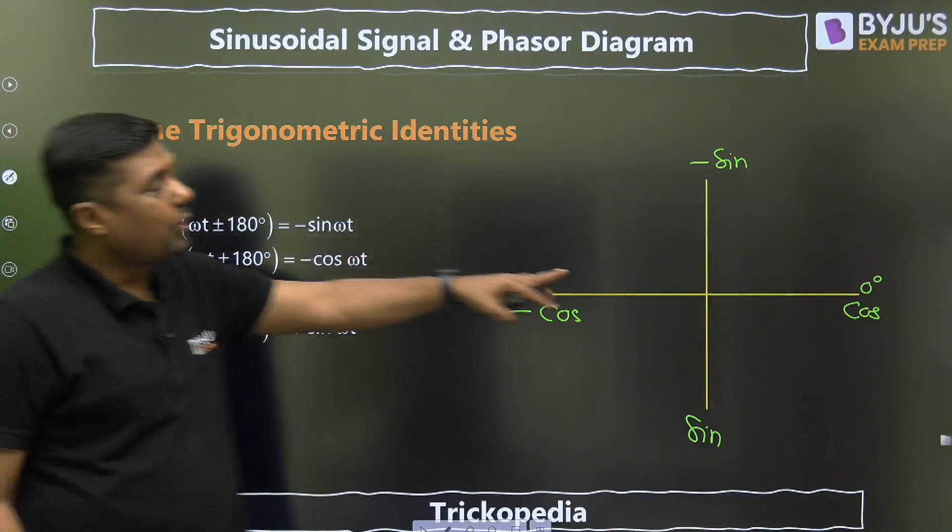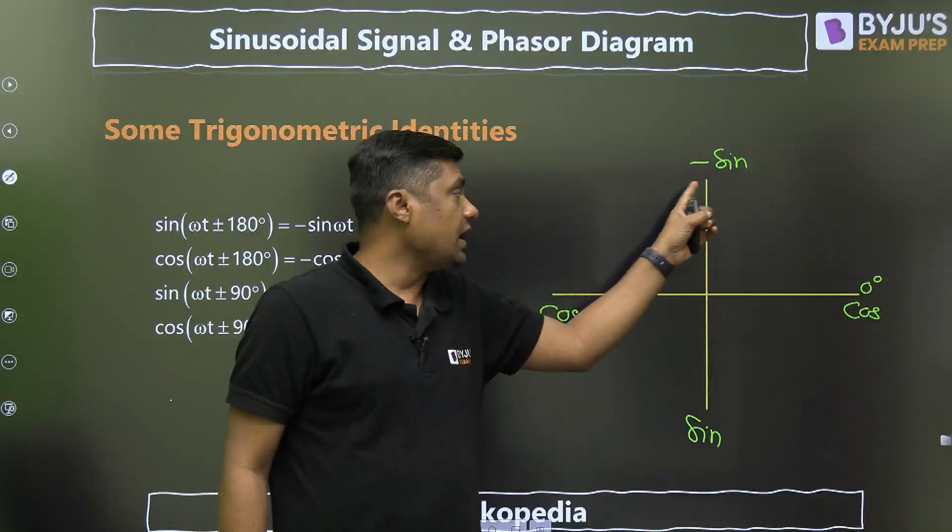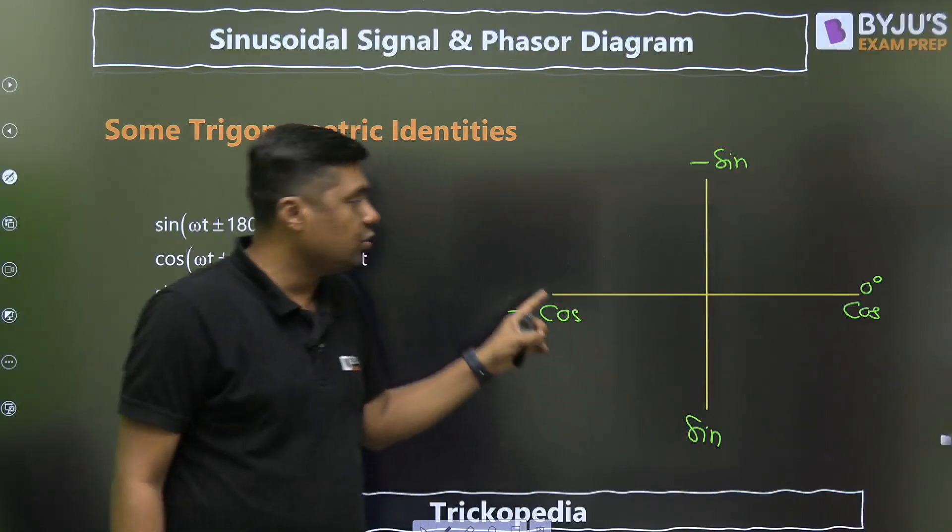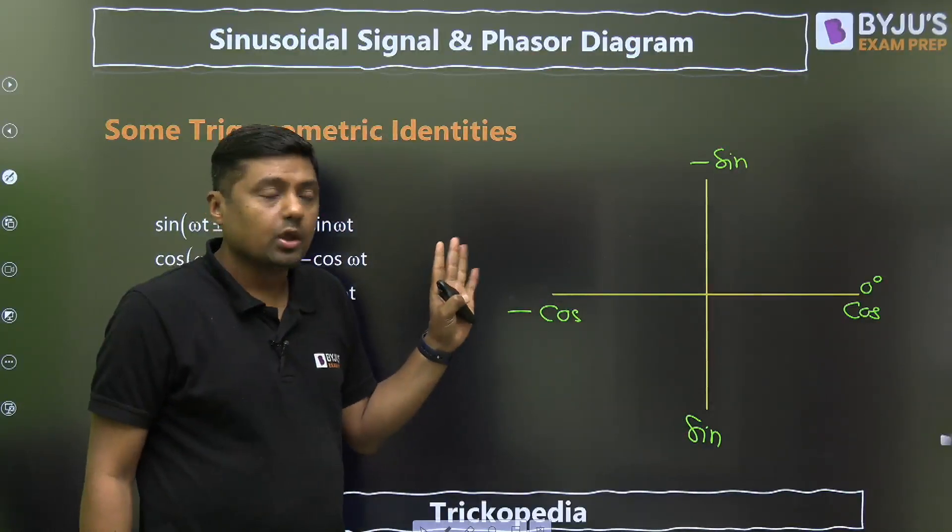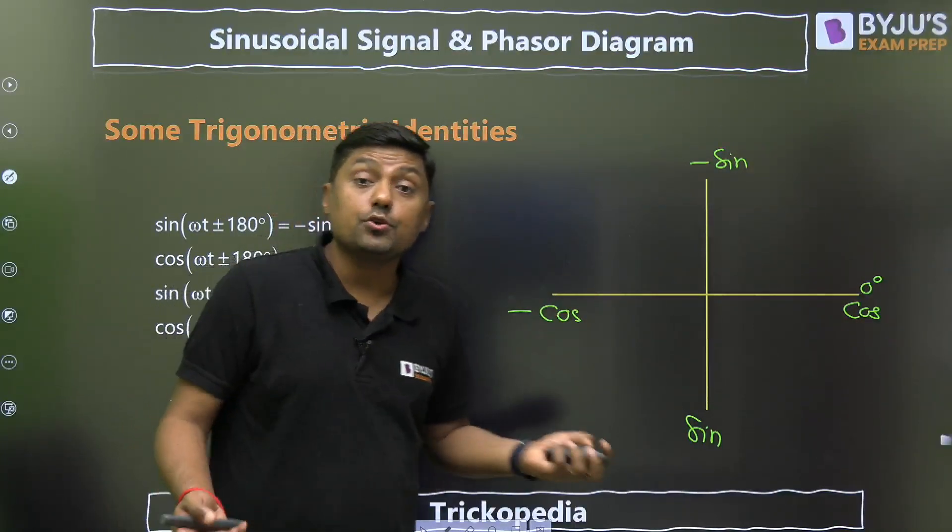Now, this is very very important. This is called first quadrant, so angle will vary from 0 to 90 degrees, then 90 towards 180 here, 0 towards minus 90 degrees, and from minus 90 to minus 180 degrees. This is cos, this is sin, minus sin, this is sin, and this is minus cos. What is the use?